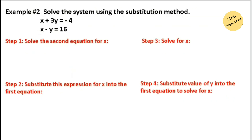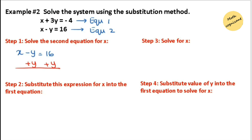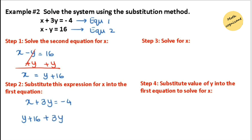We have example number 2. Let's number the equations as 1 and 2. In this question, let's take equation 2 to solve for x. We subtract y from both sides, leaving x equals 16 plus y, or y plus 16. Now substitute this partial value of x into the first equation: x plus 3y equals negative 4 becomes y plus 16 plus 3y equals negative 4.